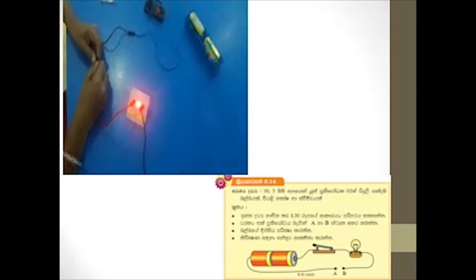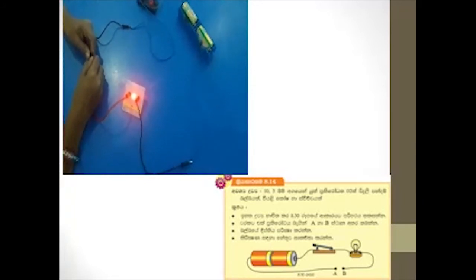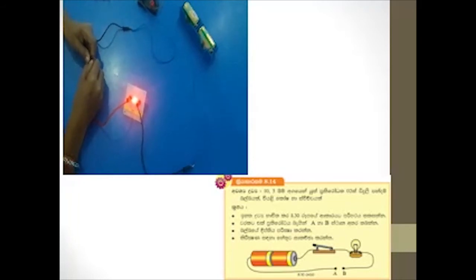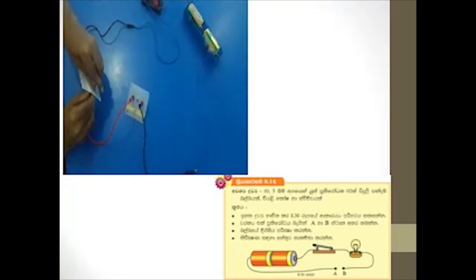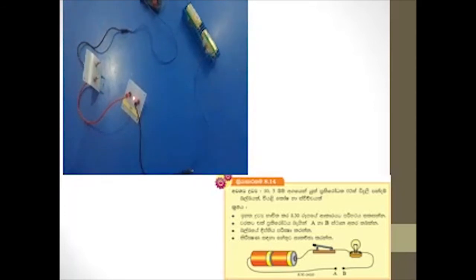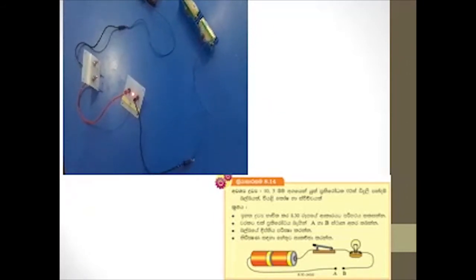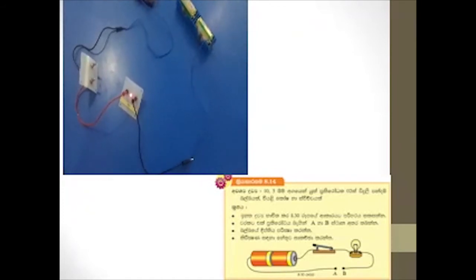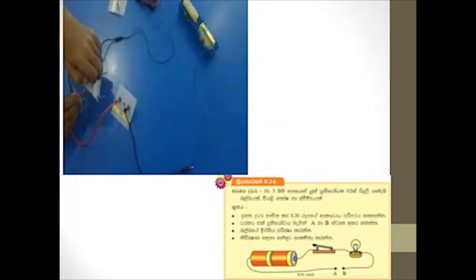This is a simple circuit with two dry cells, a bulb and a switch. Here you can observe the brightness of the bulb. Now we are going to connect a resistor with 5 ohms value to this circuit. You can observe that the brightness of the bulb decreases once after connecting the resistor. Again we are going to connect a resistor with 10 ohms value. You can observe that the brightness has further decreased. When observing the brightness of the bulb without the resistor, it lights brightly again. So it is very clear that resistors make obstacles in current flow.